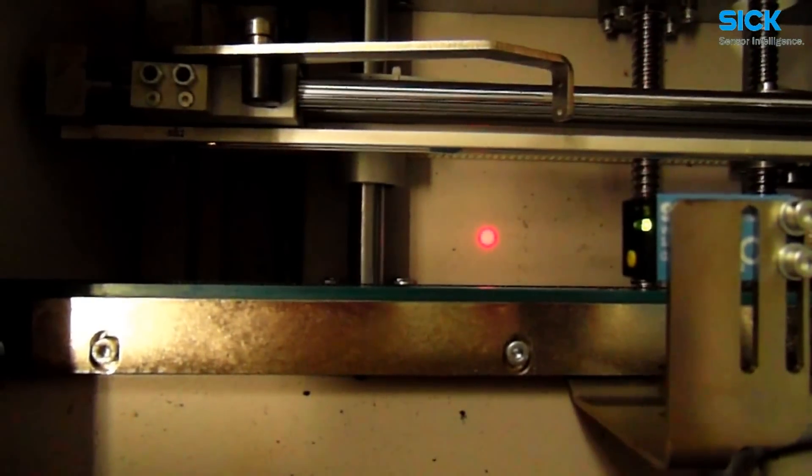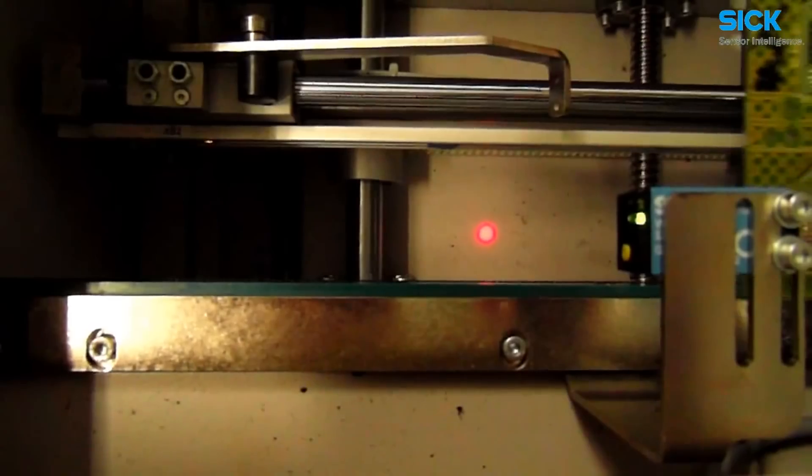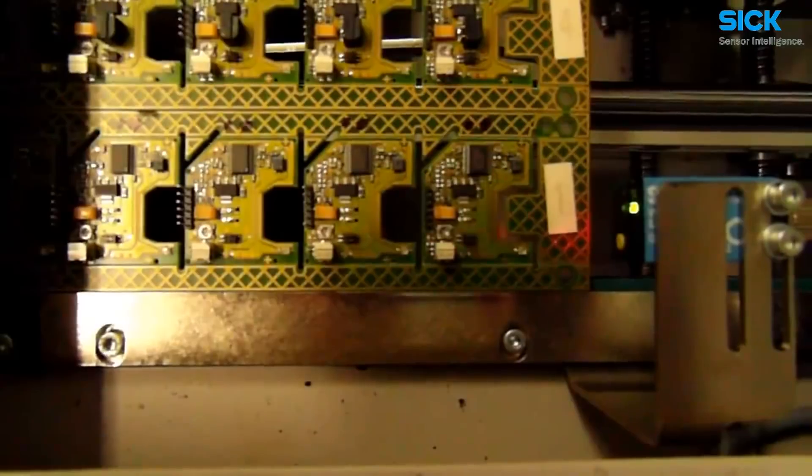For the detection of circuit boards, it's very clear how a traditional round light spot found on standard photoelectric sensors will have problems because the light will shine through the gaps.